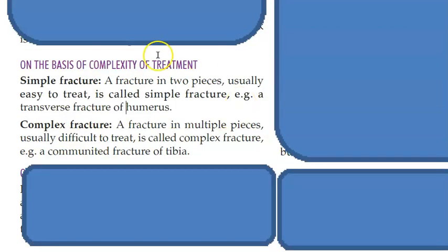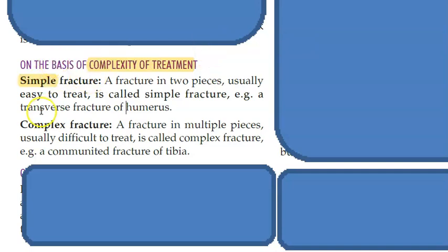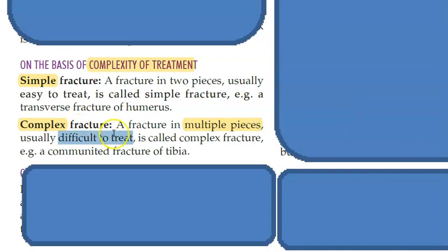Based on the complexity of treatment, there is simple fracture and complex fracture. When they say simple or complex, they are referring to how easy or difficult it is to treat. If it is in two pieces you can treat it easily — that is a simple fracture. A complex fracture has multiple pieces and is very difficult to treat. This is also called a comminuted fracture — comminuted meaning multiple pieces.